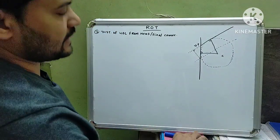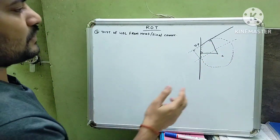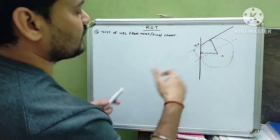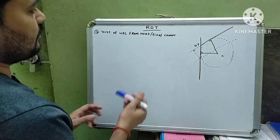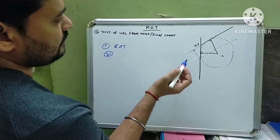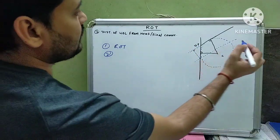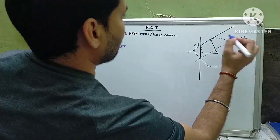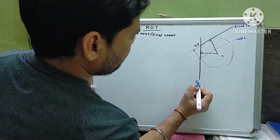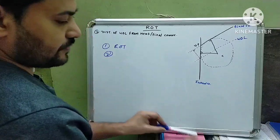Hello friends, this is the second lecture for this Rate of Turn topic. I have already drawn this circle to save time in the video. As covered in the previous video, we have already calculated the rate of turn, the distance from the wheel over point to the next waypoint, and we discussed the wheel over line. This is the wheel over line, this is your final course or next course, this is your initial course, and this is the waypoint.